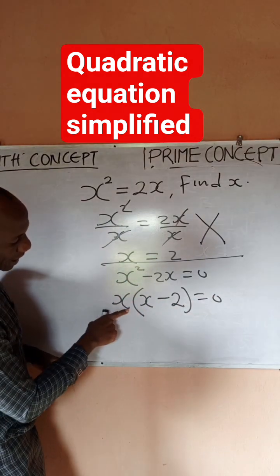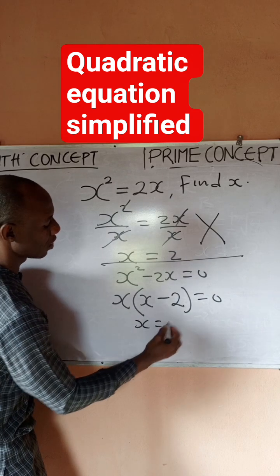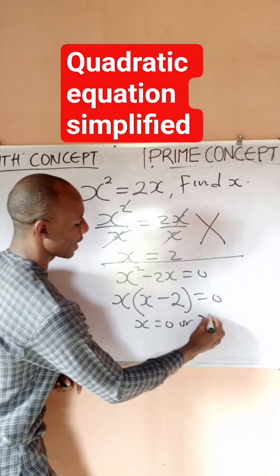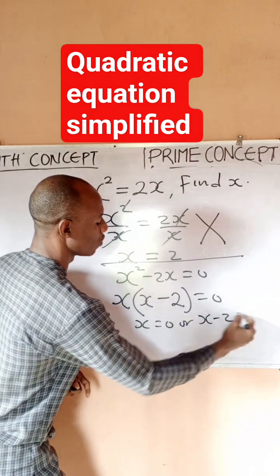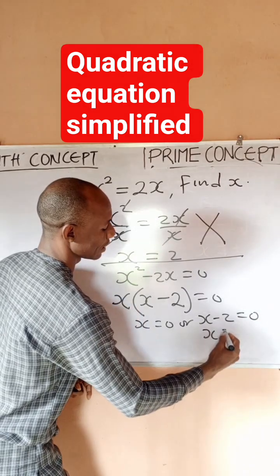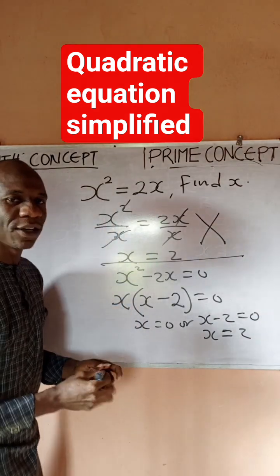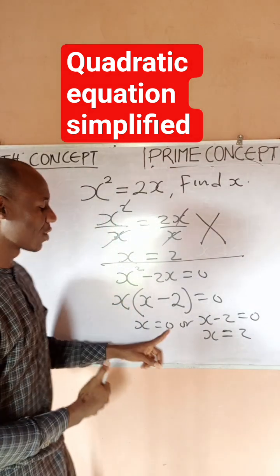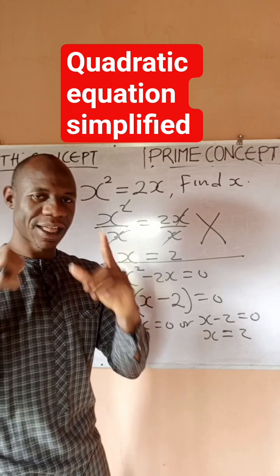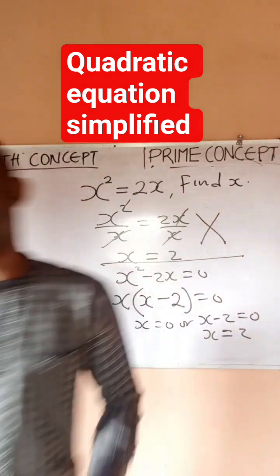You can clearly see that x is equal to zero, or x minus 2 equals zero which gives x equal to 2. So the two values of x are zero and two. Thanks for watching Prime Concept.